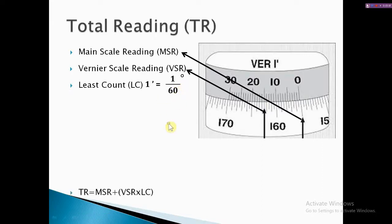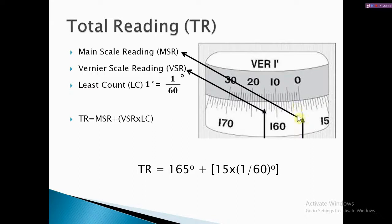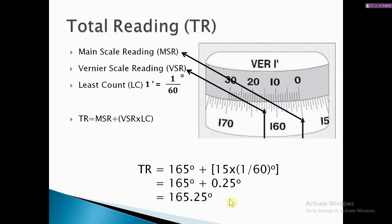Total reading = main scale reading + (vernier scale reading × least count). The vernier scale reading is a numeric value without a unit; multiplied by the least count it gives degrees. So in this example: total reading = 155° + (15 × 1/60°) = 155° + 0.25° = 155.25°. That's how you take the total reading.